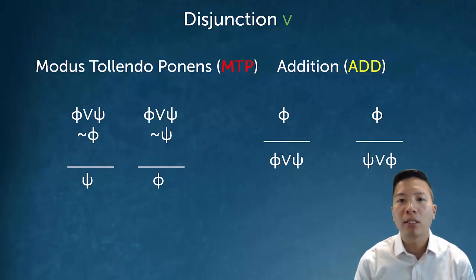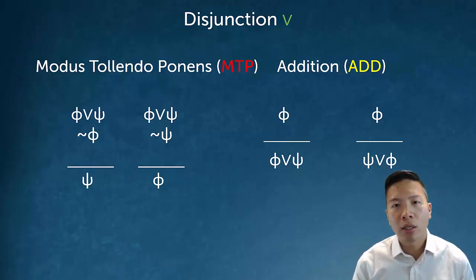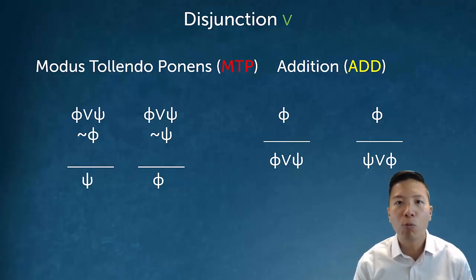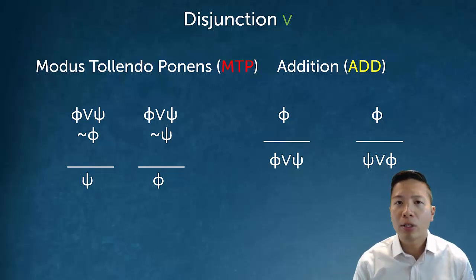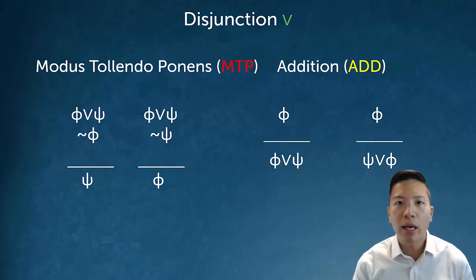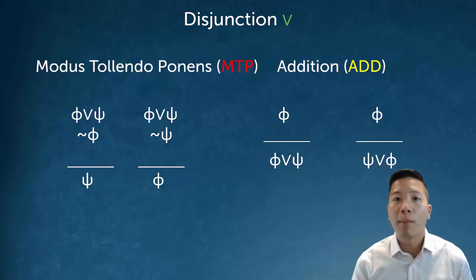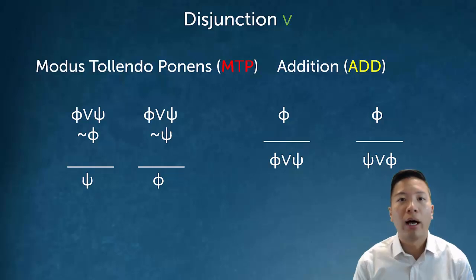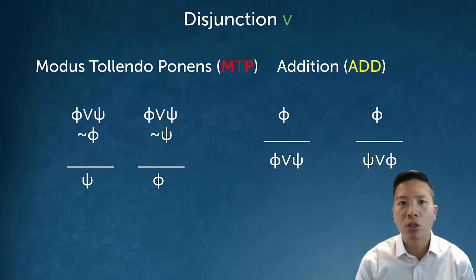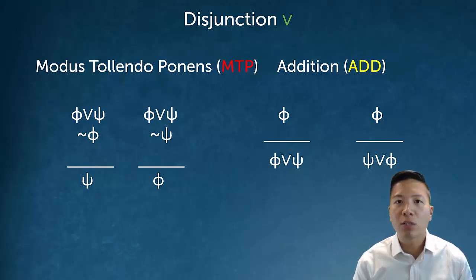Addition is the introduction rule for or — it's how I build an or statement. Unlike adjunction, for a disjunction you only need one part. If I know phi is true, then I can conclude phi or psi, or psi or phi — the order doesn't matter. So from 'my name is Alex,' which is true, I can conclude 'my name is Alex or the moon is made of green cheese,' because a disjunction is true if at least one side is true. I can pair it with anything in an or statement and that statement is true.